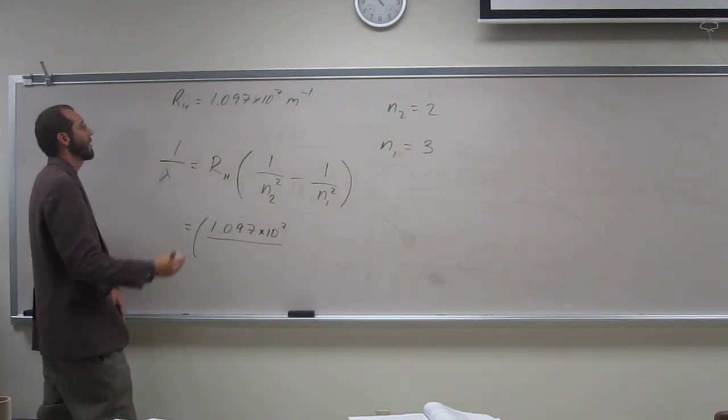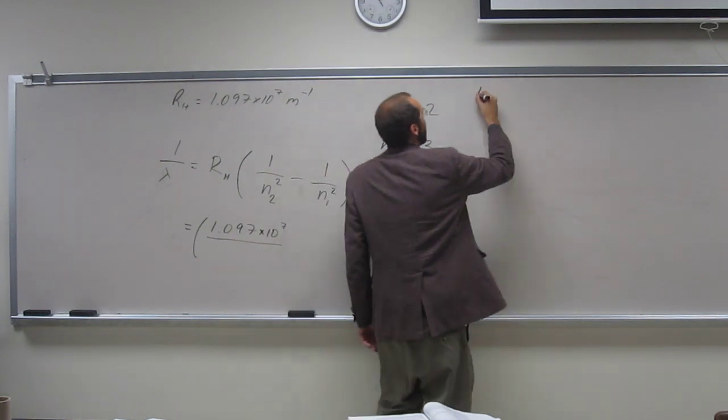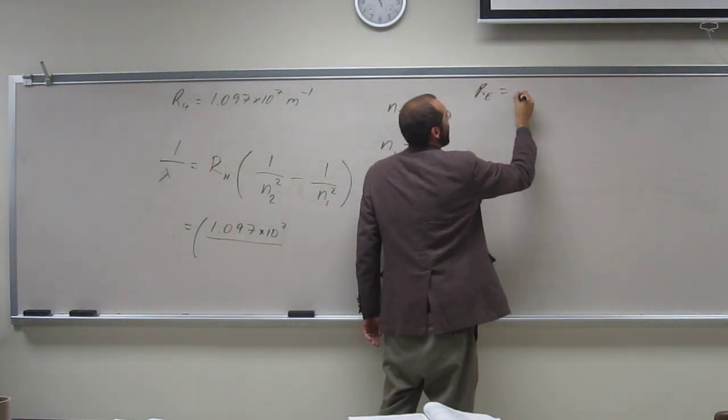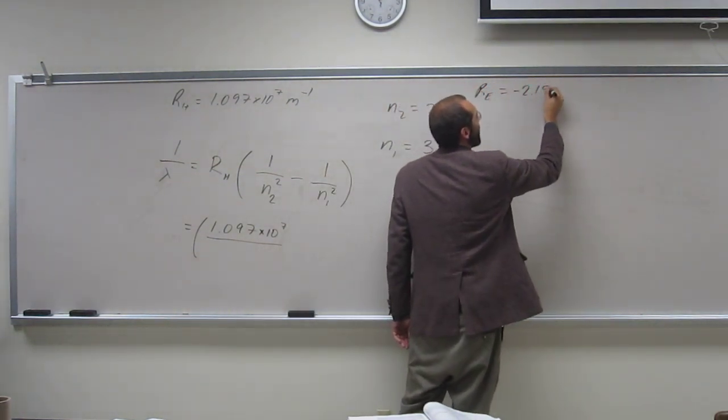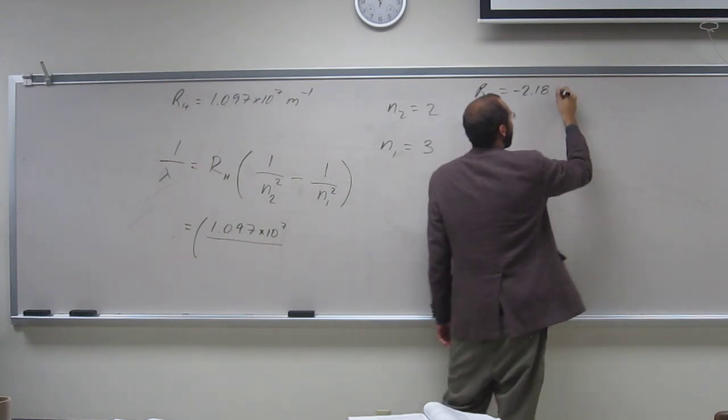Yeah, this is not an energy equation, right? The Rydberg constant for the energy equation, remember, what is that? It's going to be negative 2.18, right? So, that's where you get that negative from.